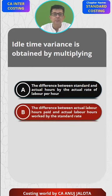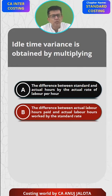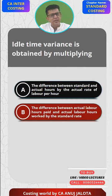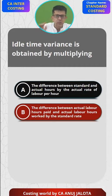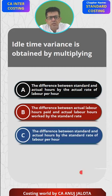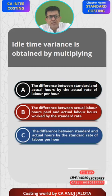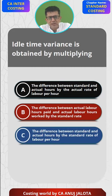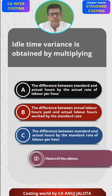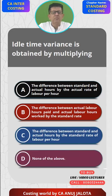Option B: the difference between actual labor hours paid and actual labor hours worked — the difference between both these hours is nothing but idle time, so idle hours multiplied by standard rate. Option C: the difference between standard and actual hours multiplied by standard rate of labor per hour. Option D: none of the above.